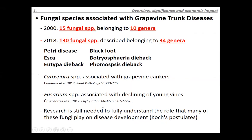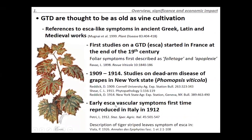Not all the fungi described have completed what we call Koch's postulates, where we need to prove that the fungus isolated from the symptom is the actual causal agent when we artificially inoculate plants. More research needs to be completed to really understand the role these species play in symptom development.